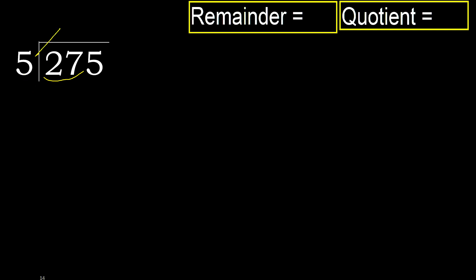5 multiply by which number is nearest to 27 but not greater? 5 multiply by 6 is 30 — 30 is greater. Multiply by 5: 25 is not greater. 27 minus 25 equals 2.